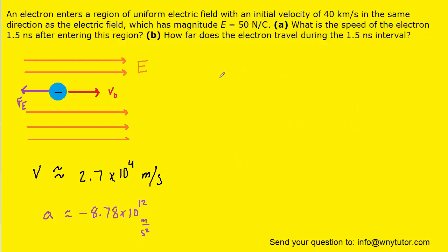For part B, we're essentially being asked for the distance that the electron travels. Now, because the acceleration is a constant value, we can turn to another formula from kinematics. And that tells us that the distance is going to equal the average velocity multiplied by the time. Now, technically, this is an equation for displacement. However, the electron is not changing the direction of its motion as it passes through the electric field. So, that means distance and displacement are the same value.